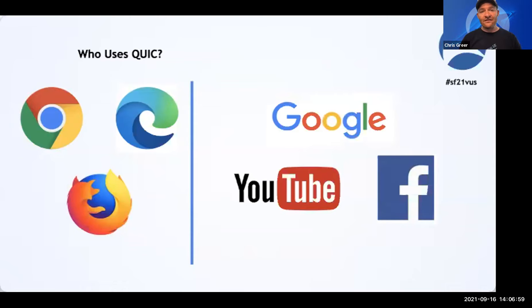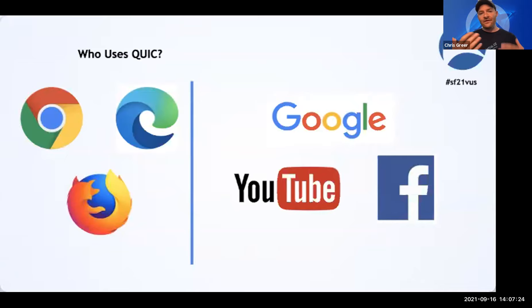Uber has built QUIC into their application, so their app is actually using QUIC to communicate to central services, and they found some good performance improvement as well. QUIC is here. Even this Zoom session — it's not over QUIC — but Zoom uses a UDP stream to deliver this between all of us. That's how you see my screen, my video, hear my voice. In time, perhaps even a session like this will eventually flip over to QUIC.